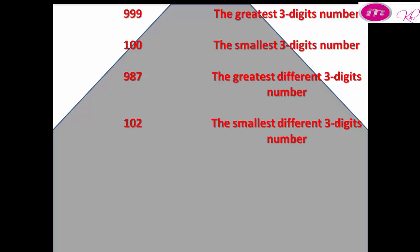The smallest three-digit number is 100. The greatest three-digit number with different digits is 987. The smallest three-digit number with different digits is 102.